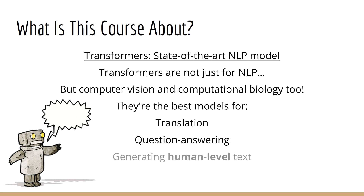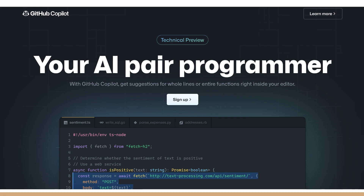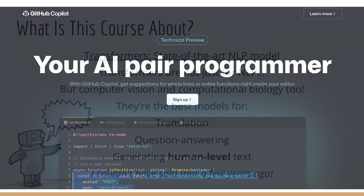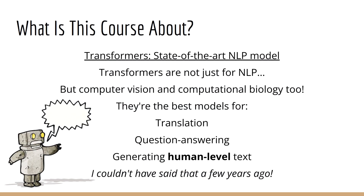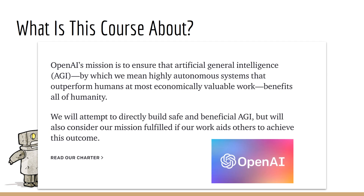In the field of NLP, transformers produce the best models for translation, question answering, and even generating text which is indistinguishable from text generated by humans. Transformers are so good they can even write computer code. In fact, models such as GPT-3 have everyone talking about how this could be the key to AGI, or artificial general intelligence.